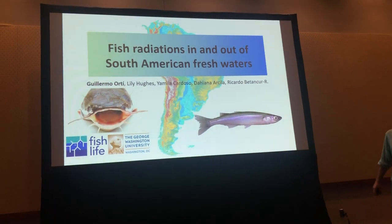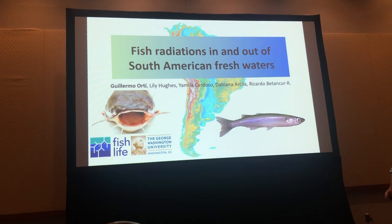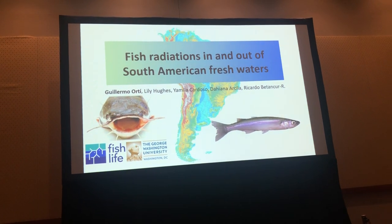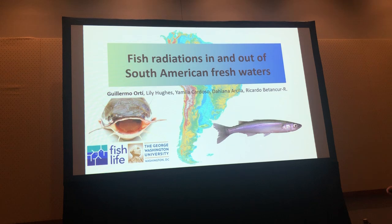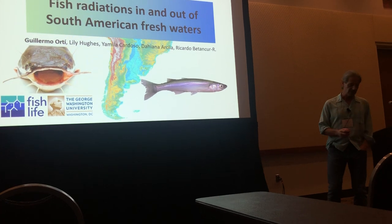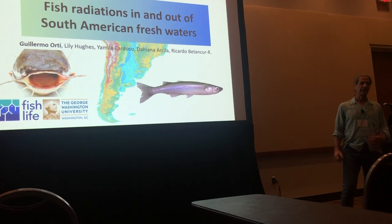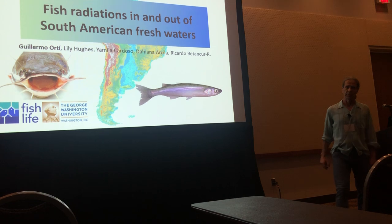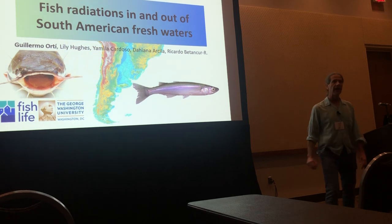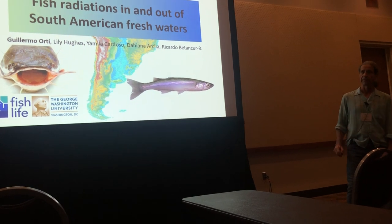South American freshwaters harbor a huge diversity of freshwater fishes. In fact, about one quarter of all living species of fishes live there. The majority belong to a group called otophysans, an ancient lineage of Gondwanan origin, or so-called primary freshwater fishes. They include familiar forms like catfishes, tetras, and electric fishes from South America. Other groups of more recent marine ancestry also form an array of diverse forms, and the interplay between freshwaters and marine habitats is known to be pretty important in shaping macro- and micro-evolutionary patterns of diversity.